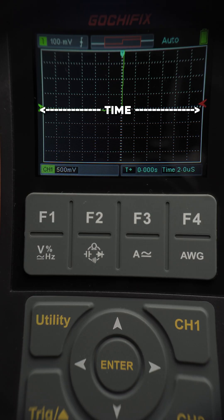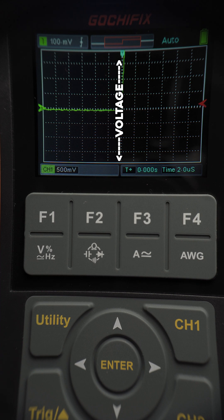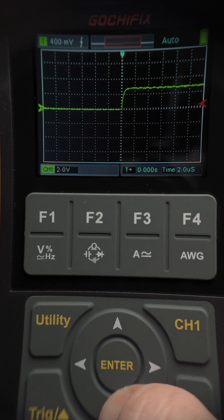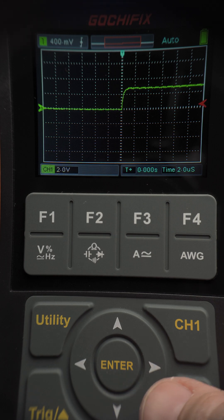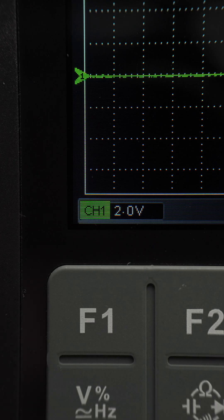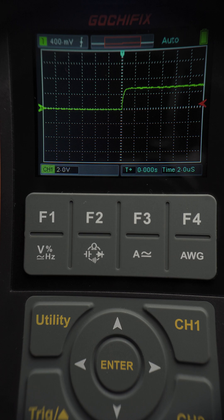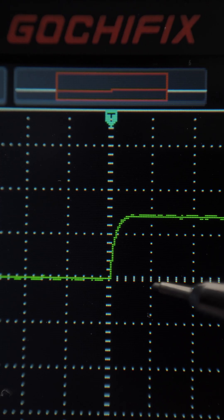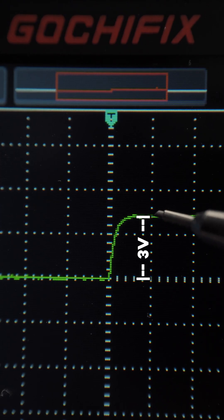The horizontal axis represents time, while the vertical axis represents voltage. We'll adjust the vertical zoom to measure the signal's peak voltage. At this zoom level, each grid square equals 2 volts. The waveform peak is 1.5 squares high, therefore the peak voltage is approximately 3 volts.